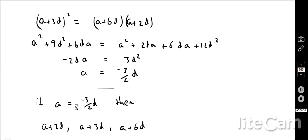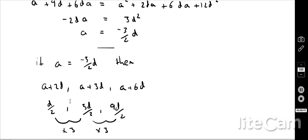Okay, so for the second part of the question, well, this time I know that A is minus 3 over 2D. So therefore, the three terms of the geometric progression that I've got, the A plus 2D, the A plus 3D, the A plus 6D. Well, if A is minus 3 over 2D, I can substitute that in there. So the first term of my geometric is D over 2. Second term of my geometric is 3D over 2. The third term of my geometric is 9D over 2.